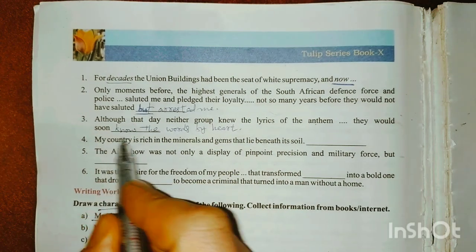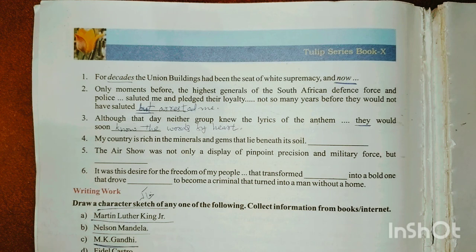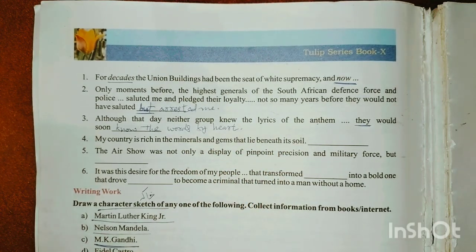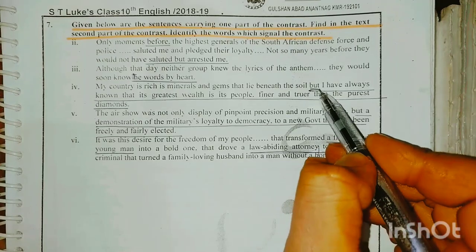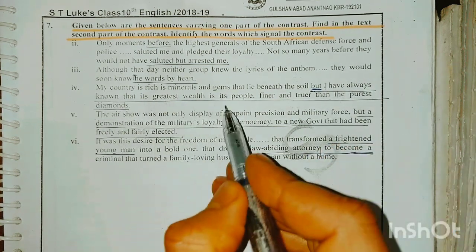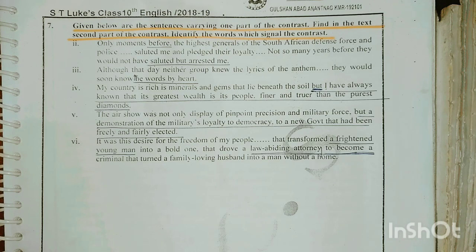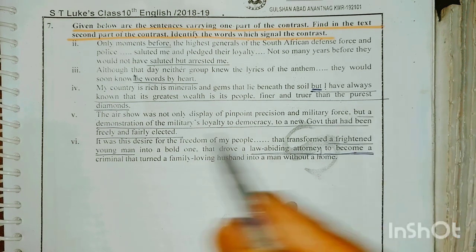It is a national anthem. The next contrast: 'My country is rich in the minerals and gems that live beneath its soil,' but 'I have always known that its greatest wealth is its people, finer and truer than the purest diamonds.' The writer contrasts material wealth — minerals and gems — with human wealth, saying people are finer and truer than the purest diamonds.